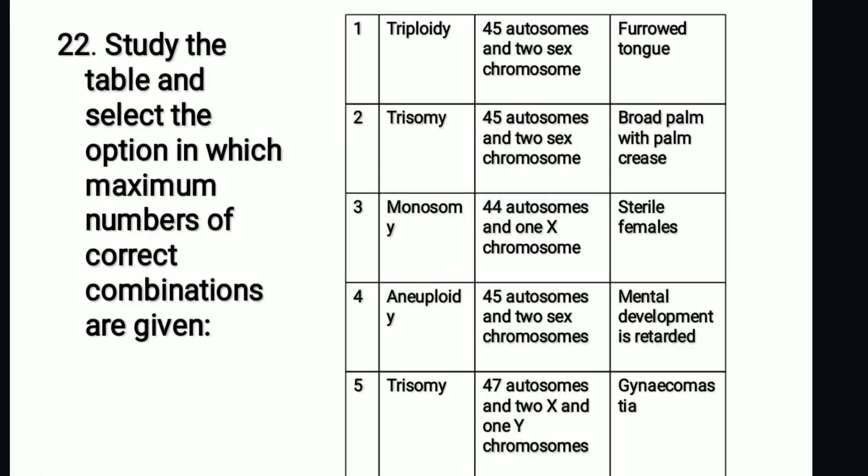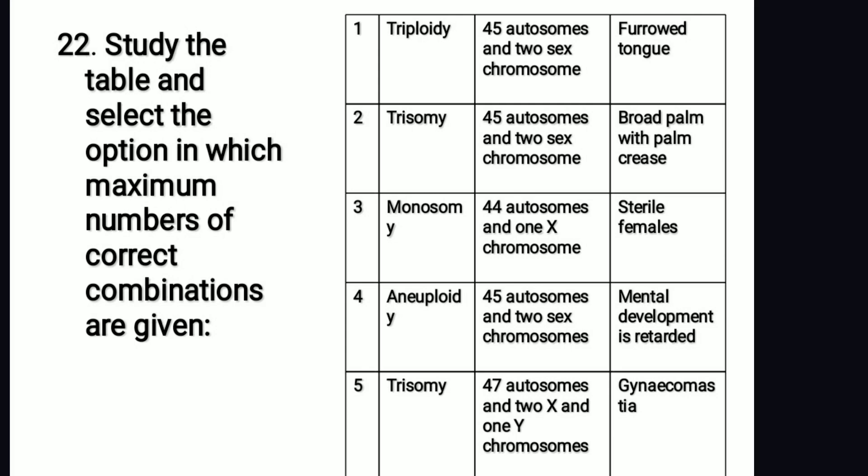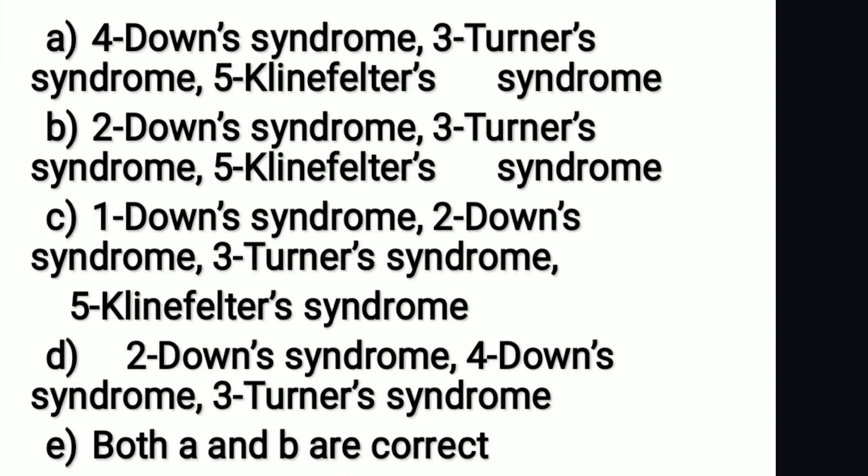Study the table and select the option in which the maximum number of correct combinations are given. The right answer is option D: the second is Down syndrome, the fourth is Down syndrome, and the third is Turner syndrome.